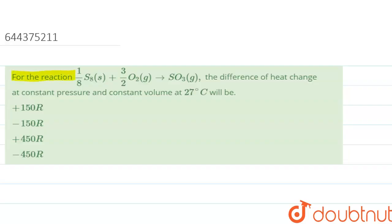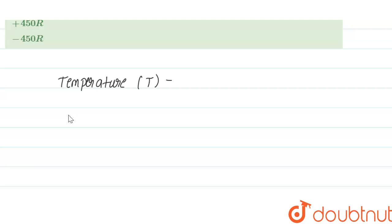Hello. In this question, we are given the reaction: 1/8 S₈ solid + 3/2 O₂ gas → SO₃ gas. We have to calculate the difference of heat change at constant pressure and constant volume at 27°C. The temperature T is given as 27°C, which we convert to Kelvin by adding 273, giving us 300 Kelvin.